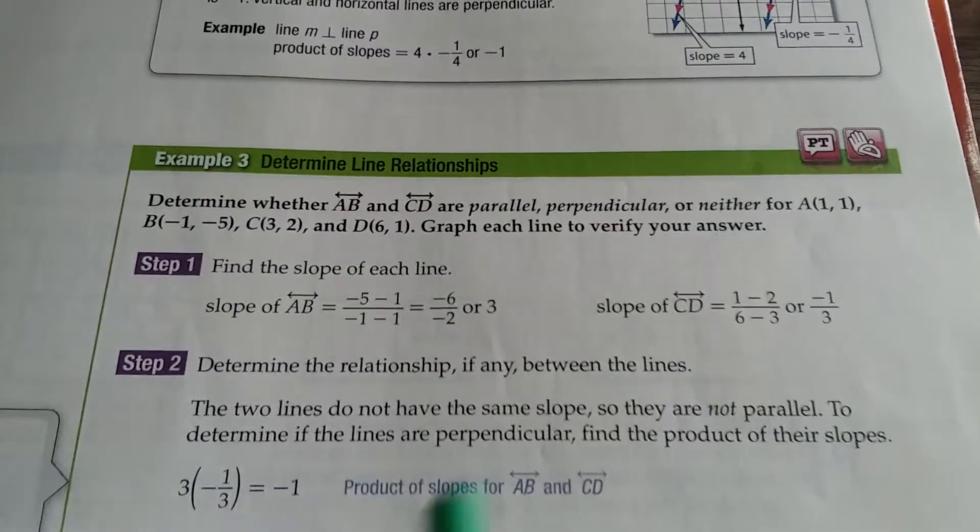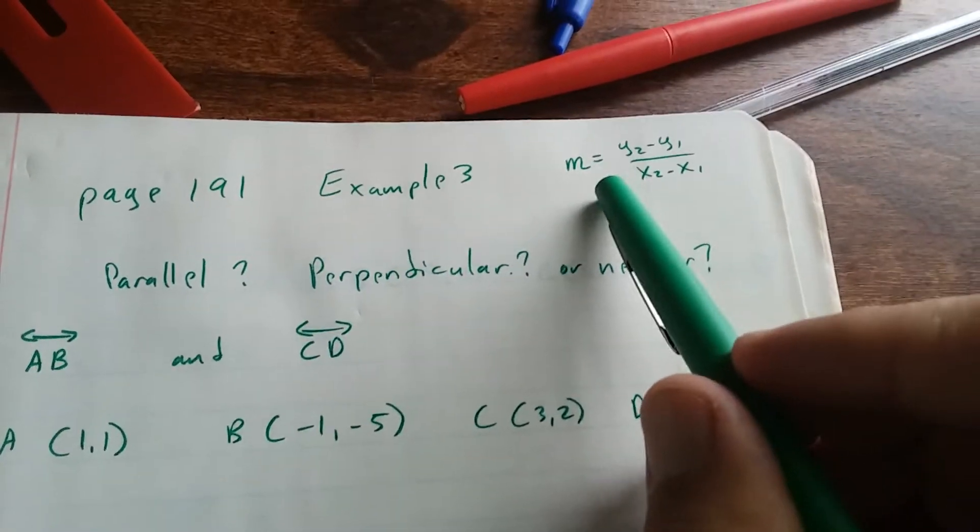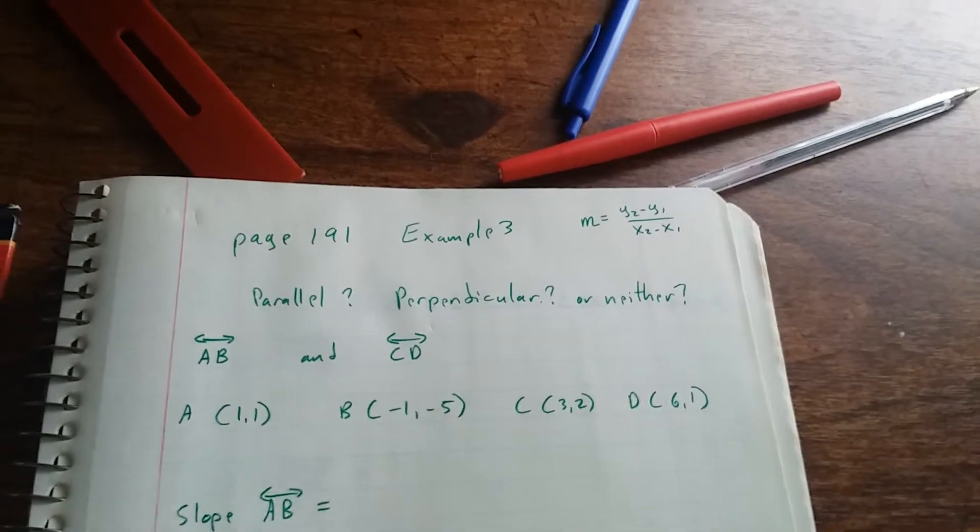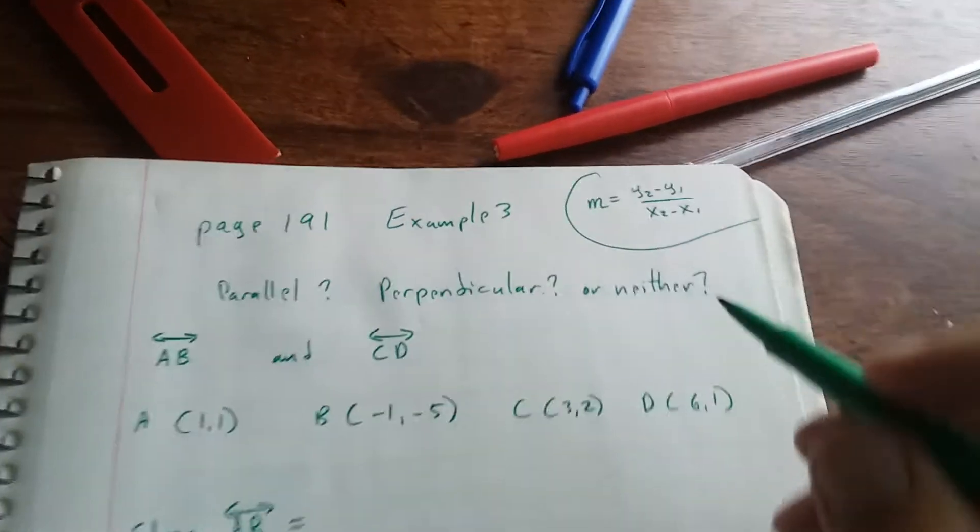So the first thing we need to do is find the slope of each line. So we're going to use the slope formula, which is M equals Y2 minus Y1 over X2 minus X1. So we're going to be using this. You may want to write that down, circle it, put it somewhere handy.